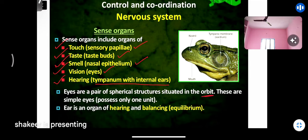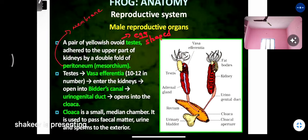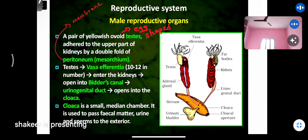Eyes are a pair of spherical structures situated in the orbit — they are simple eyes, not compound eyes. Compound eyes are found in cockroach and dragonfly, with thousands of simple units. The frog has simple eyes. The ear functions as an organ of hearing as well as balance, though full clarity is still being studied.